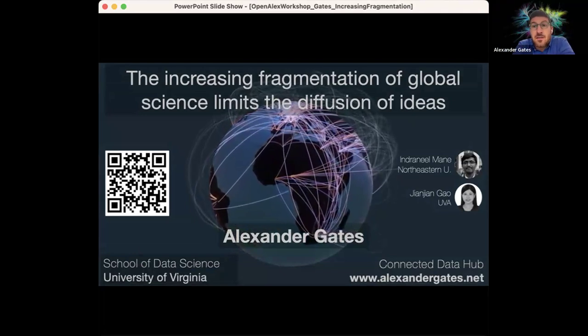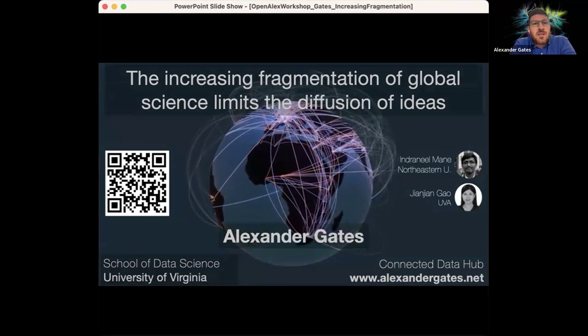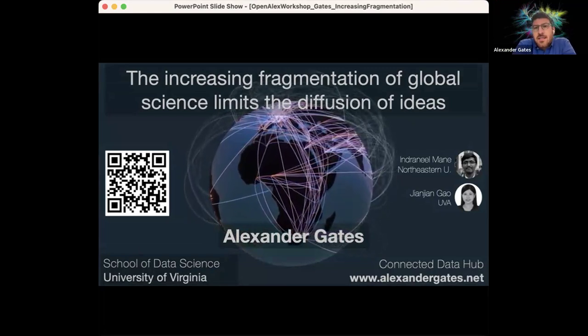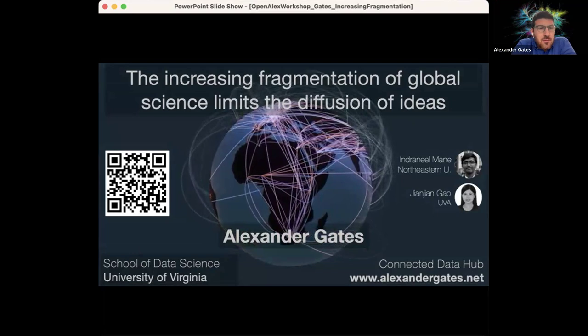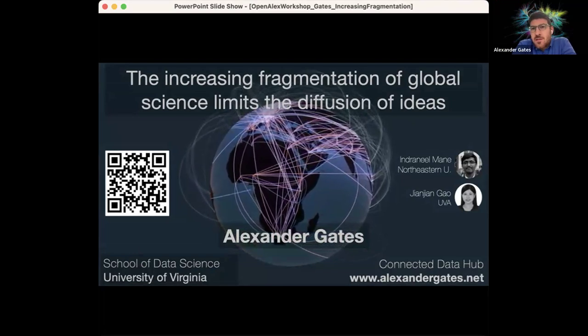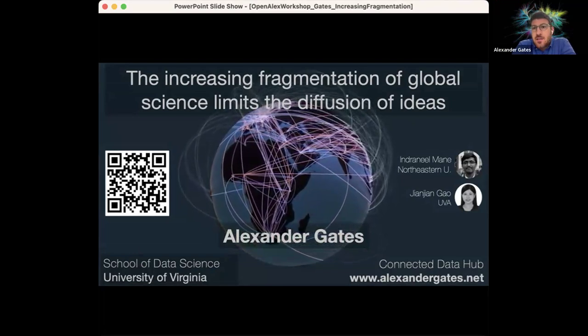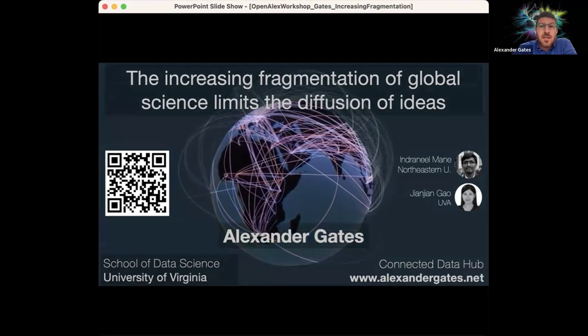My name is Alex Gates. I'm an assistant professor at the School of Data Science at the University of Virginia, where I lead the Connected Data Hub, a vibrant and growing group of students and researchers doing research at the intersection of network science and computational social science.